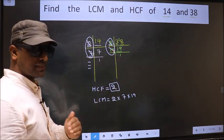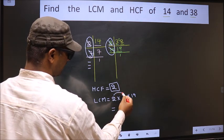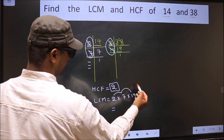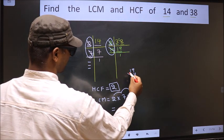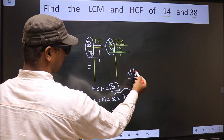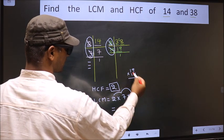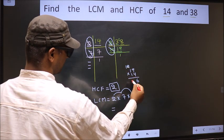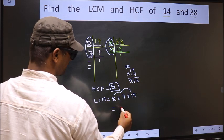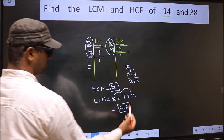So our LCM is 2 into 7 is 14. 14 into 19. 14 into 9 is 126, so 6 here, 12 here. 14 once is 14 plus 12 is 26. So we get 266, is our LCM.